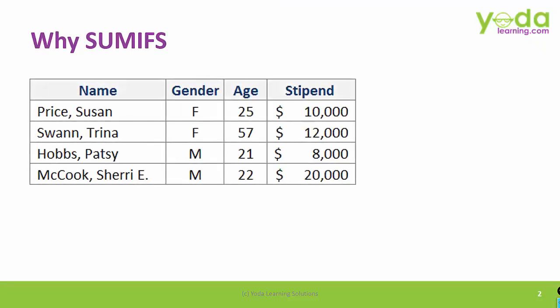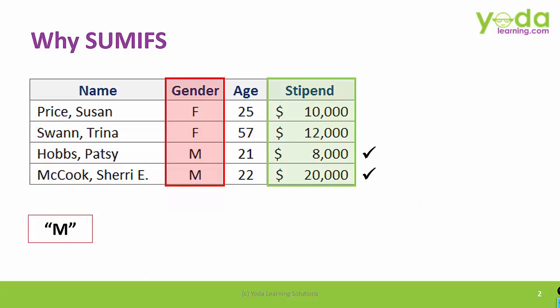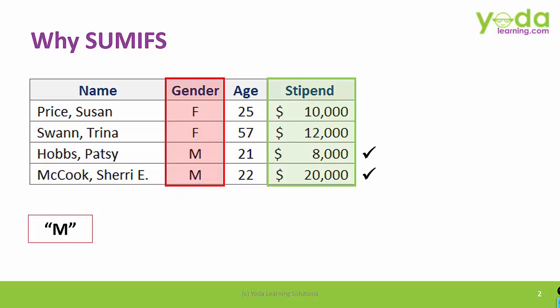Let's first see why SUMIFS. Suppose you have a dataset with name of people, gender, age, and a stipend. If somebody asks you to give the total stipend of all the males, you look into the gender column and the stipend column and give a total of 28,000. SUMIFS aggregates multiple values based on your criteria. If you had applied COUNTIFS here, you would have got the answer 2 — meaning there are two male members.